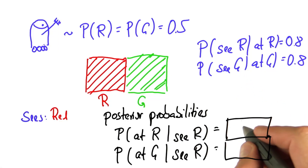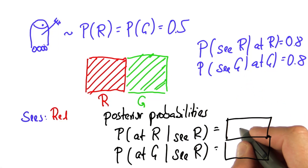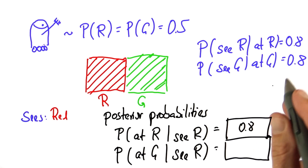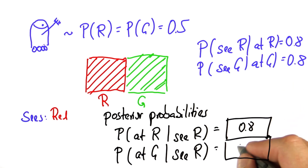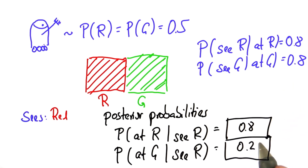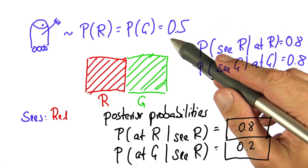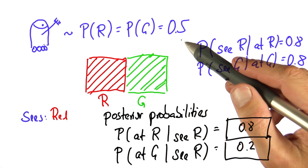In this example, it gives us funny numbers. The posterior for red is 0.8, the one for green is 0.2, and this has all to do with the fact that in the beginning the robot had no clue where it is.